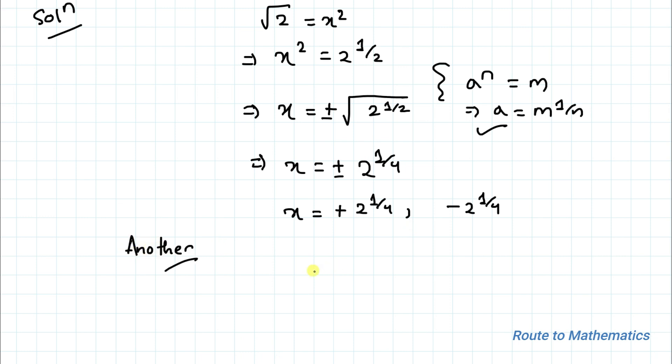Another approach: here we have x square equals root 2. Let's take this root to the left hand side. We have x square minus root 2 equals 0.